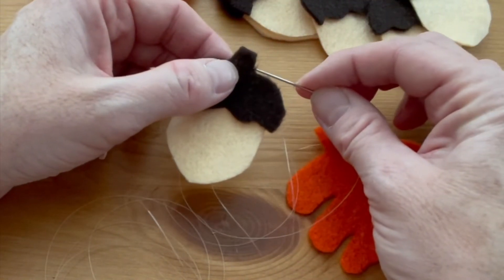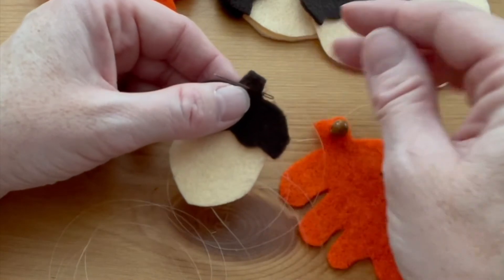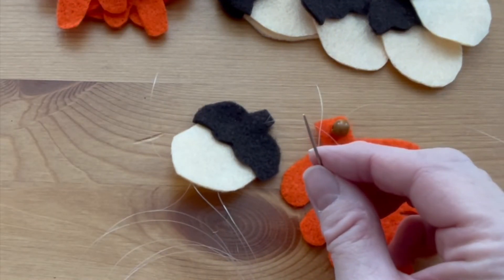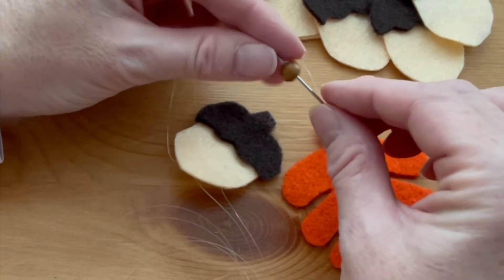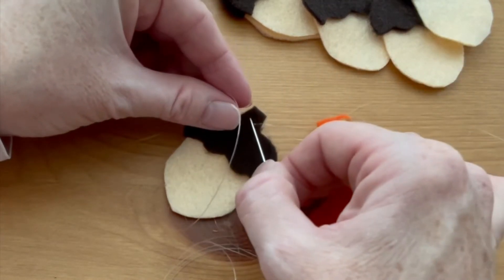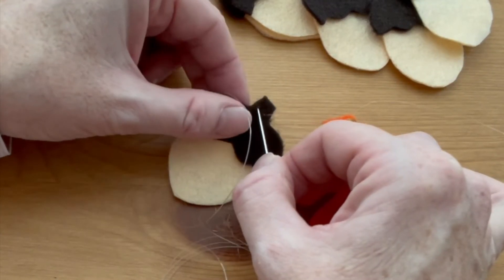Now we'll do an acorn in the same way, bringing a stitch up from the back, adding a bead, and going back down through the stem.